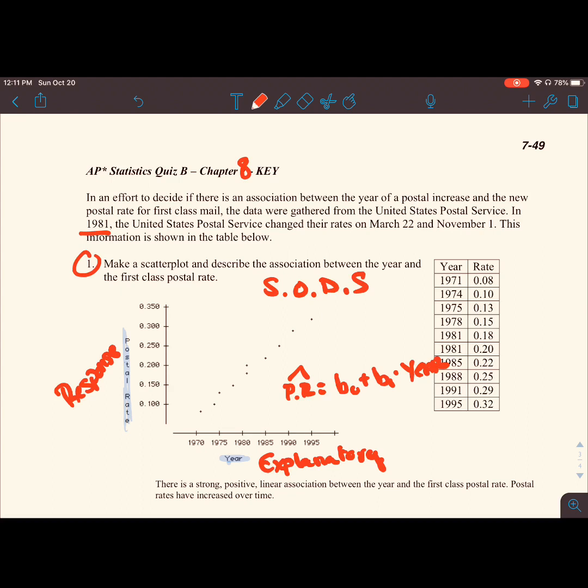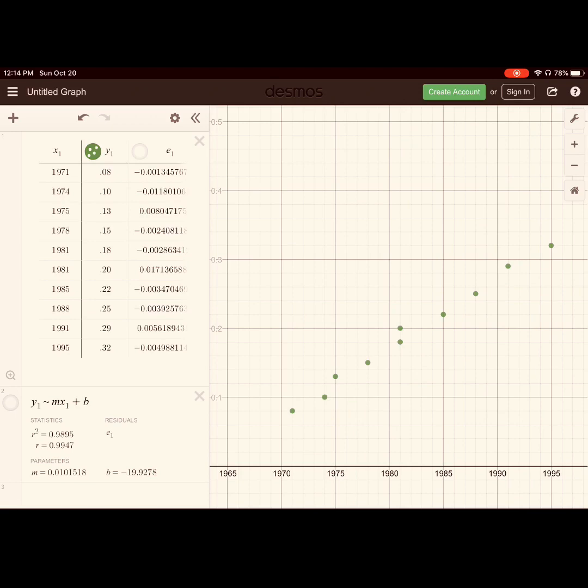Here is our data graphed nicely in Desmos. You can see our scatterplot has a strong positive linear association between year and the first-class postal rate as postal rates have increased over time. If I click on the slope-intercept formula, we can see in the bottom left-hand corner that we have our r squared. Our variability is 0.9895, and our correlation coefficient is 0.9947, which is almost perfect.